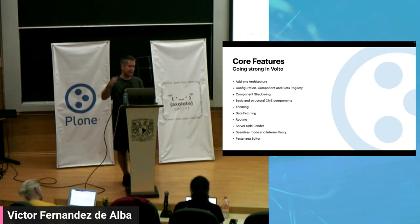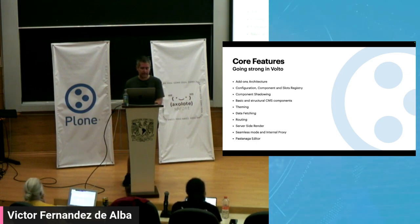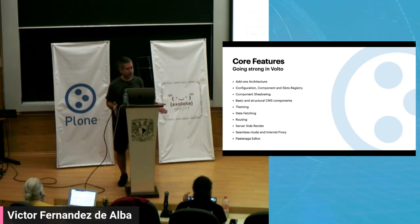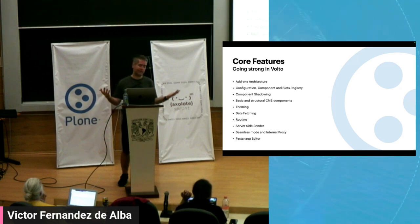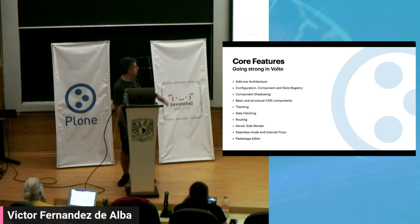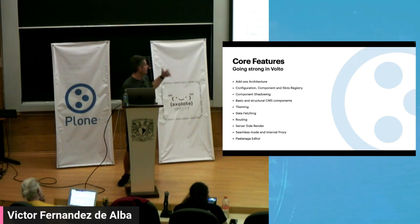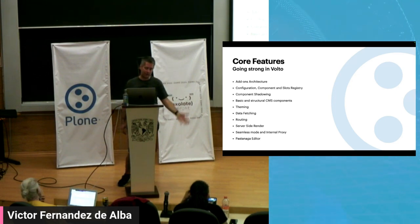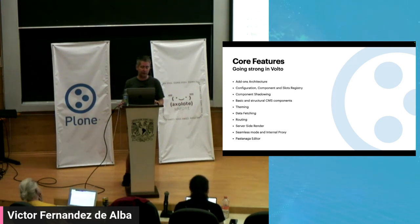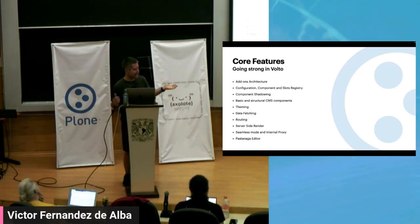We can modify modules on the fly using component shadowing. I only know Gatsby was able to do that — no other framework uses this technique, as far as I know. Combined with the Addons architecture, it's a very powerful pattern. Then we have the basic and structural CMS components: theming, data fetching, routing, server-side rendering, seamless mode, and the internal proxy — which is how we deploy and develop.